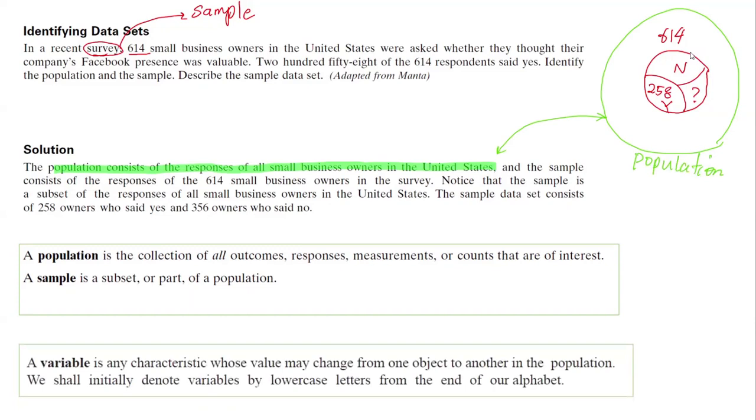Next definition is a variable. A variable is any characteristic whose value may change from one object to another in the population. We're going to use lowercase letters like x, y, t to represent a variable. A parameter is a numerical description for population. A statistic is a numerical description for a sample characteristic.